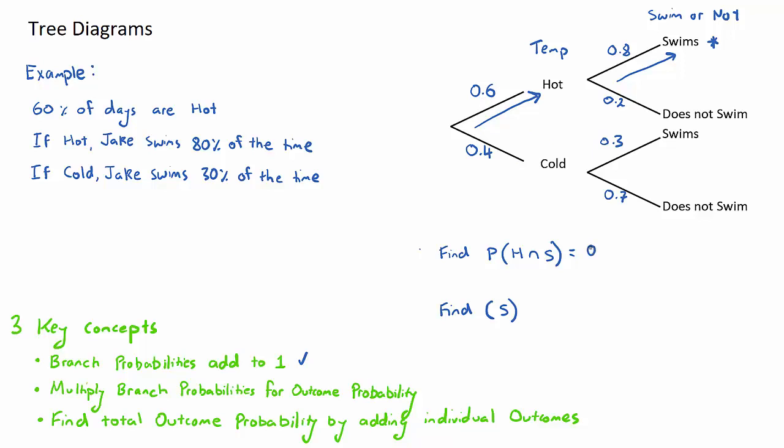This brings in the second key concept. To find this outcome here, that it's hot and he swims, we multiply the branch probabilities. In this case it will be the first branch, 0.6, multiplied by the second branch, 0.8, and that will be 0.48. Just to recap, we want to go up to get to this outcome here. I usually asterisk the outcome and we multiply the probabilities.